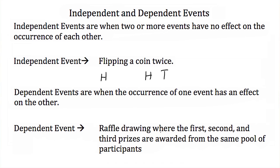So there is a 1 in 498 chance that you will win the first prize. As we continue to award prizes in the raffle drawing, the odds of winning the next prize increase. So each drawing for each prize is a dependent event because it's affected by the previous event.